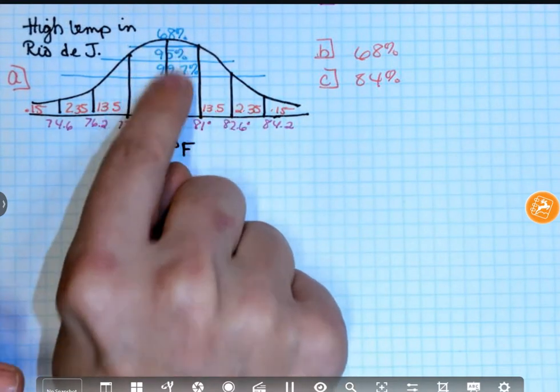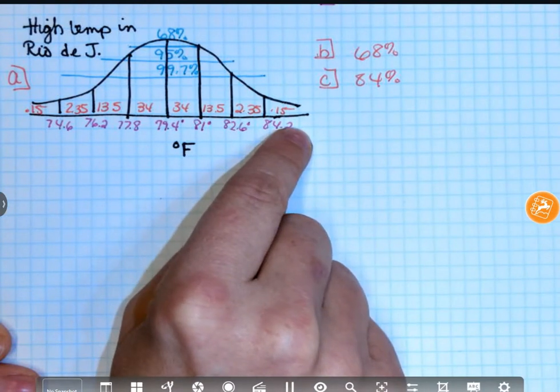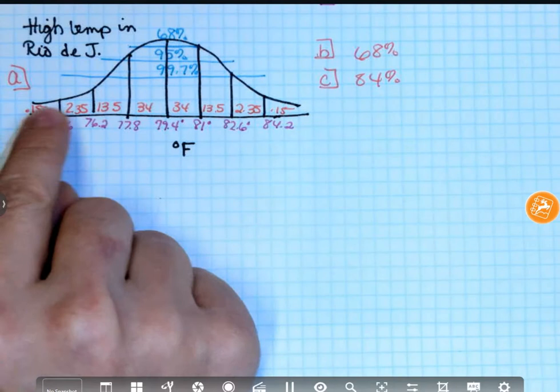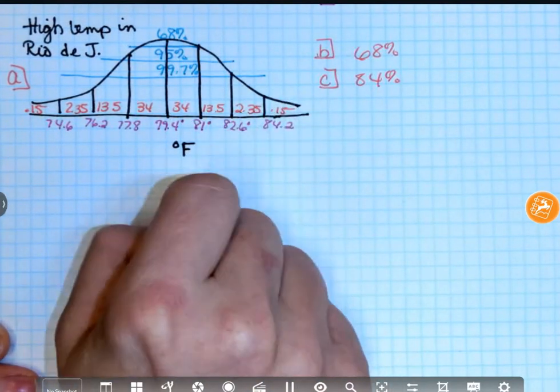I don't care which one you use. A lot of people like that one, because it's short and sweet. I like that one, because I actually use those numbers. You really should probably memorize 0.15, 2.35, 13.5, 34, 34, 13.5, 2.35, 0.15, boom.